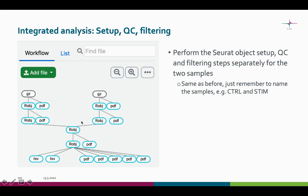Here you can see the pipeline in Chipster. Here are the two samples. As you can see, the first steps are performed for both samples separately. The only thing we need to remember to do in the very first step is naming of the samples, so that they can be distinguished later on. For plotting purposes, we use these short names in capital letters.